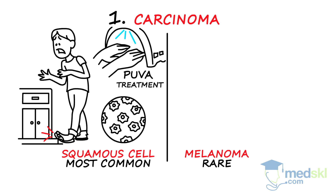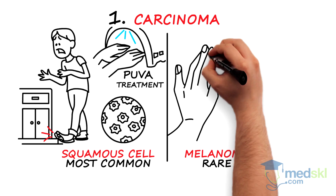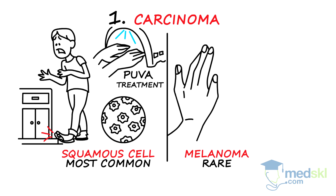Melanoma typically presents as a black to brown longitudinal line, also called a longitudinal melanonychia. Longitudinal melanonychias are generally benign, but if elements in the history raise concern for melanoma, further evaluation is needed.